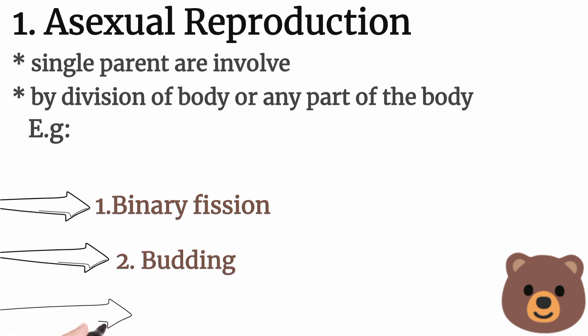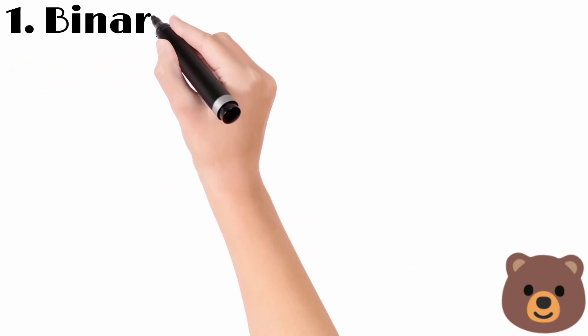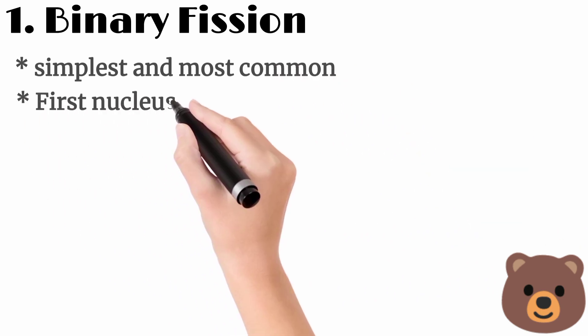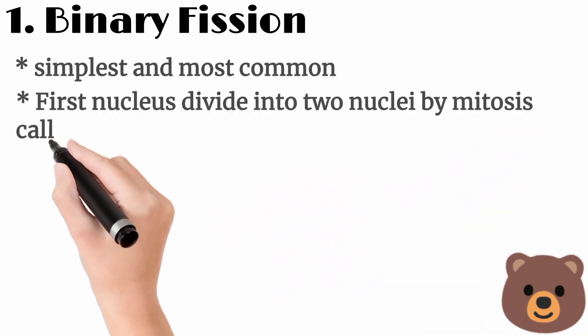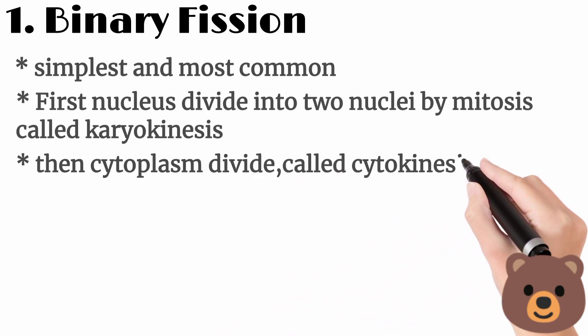Multiple fission or schizogony. Number one is binary fission, the simplest and most common form. First, the nucleus divides into two nuclei by mitosis, called karyokinesis. Then the cytoplasm divides, called cytokinesis.